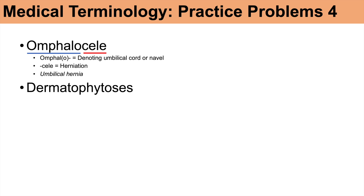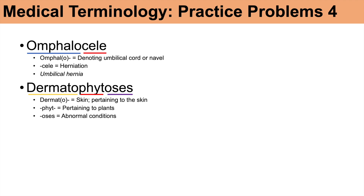The next word is dermatophytosis. Breaking it down: 'dermato' or 'derm' means skin. 'Phyte' or 'phyto' means pertaining to plants. And '-osis' means condition or abnormal condition — 'oses' being the plural. Literally it would mean abnormal plant conditions of the skin, which doesn't really make sense. But what it really means is fungal conditions of the skin. I'm not sure why this word has 'phyto' in it — plants aren't fungi — but dermatophytosis refers to fungal conditions of the skin, such as ringworm.